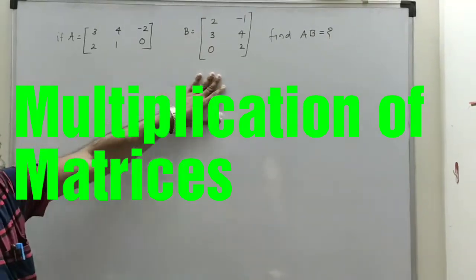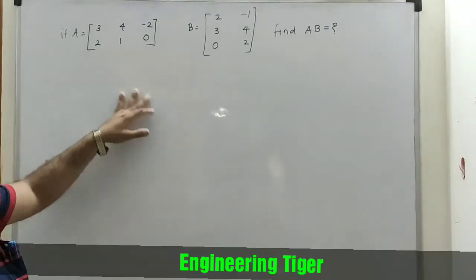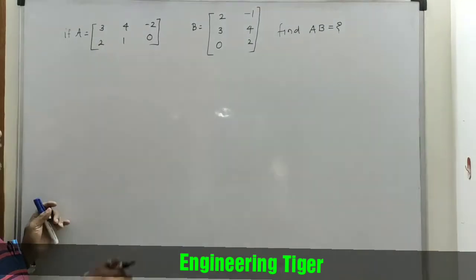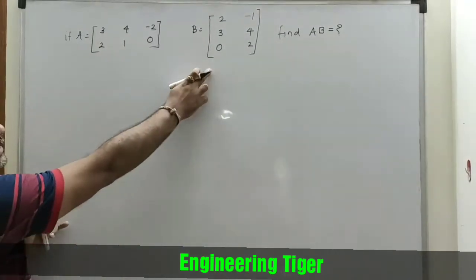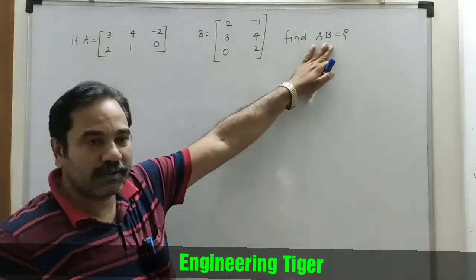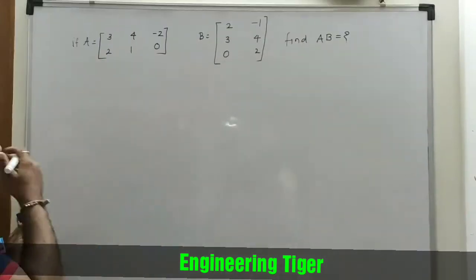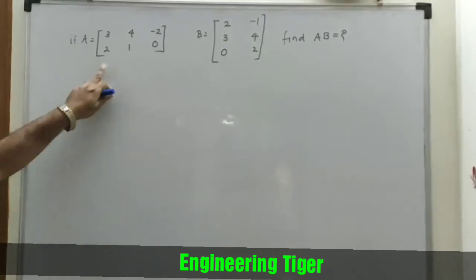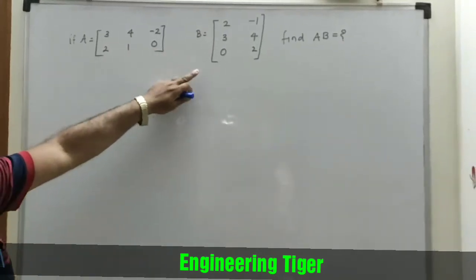Today we will discuss the multiplication of two matrices. Here we have taken two matrices A and B and we have to find out its product AB. First of all, observe the order of both matrices.